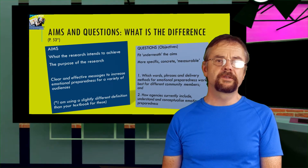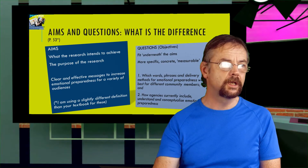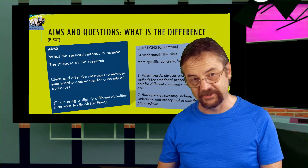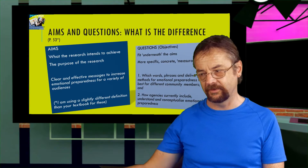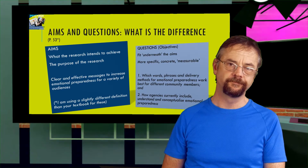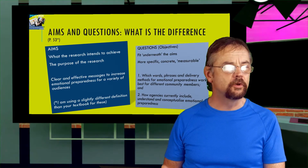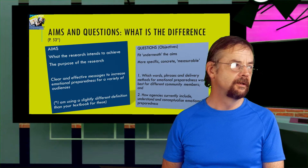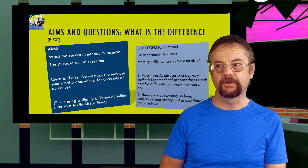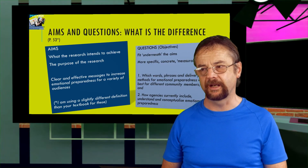The aim is the point of us asking our research question — it's an answer to the question, 'Why are you asking that research question?' The answer to that question is really what your research aim is. Saying 'because I want to find the answer to it' is an aim, but it's a bit narrow. You need to broaden it out — what's the overall aim, what are you trying to do?